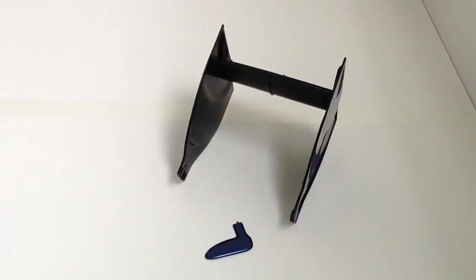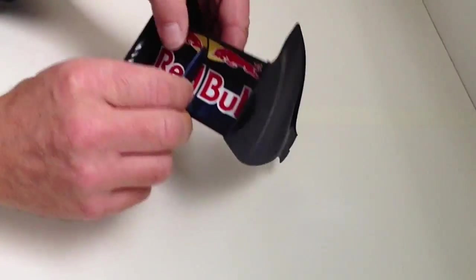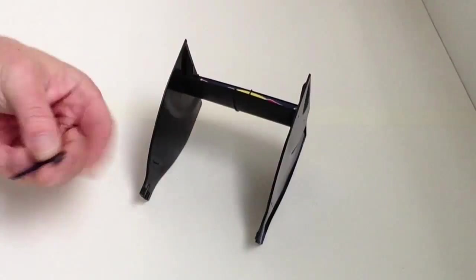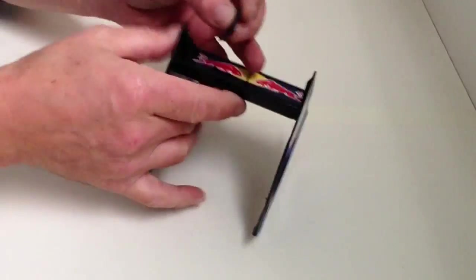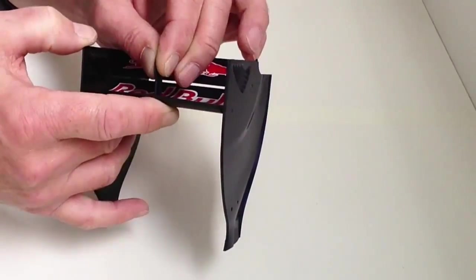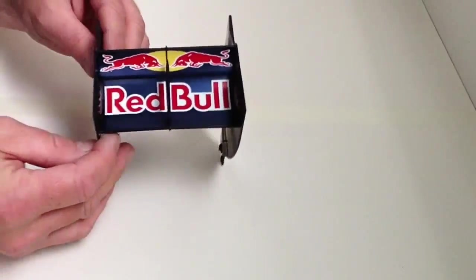And last but not least, we're going to be fitting the wing adjuster. Once again, making sure you've got the orientation right, just do a test fit like so. Take a small amount of your super glue, put a tiny little piece on the adjuster, place that down, hold it there for a couple of seconds. And there you have it, and that completes this stage of the wing.